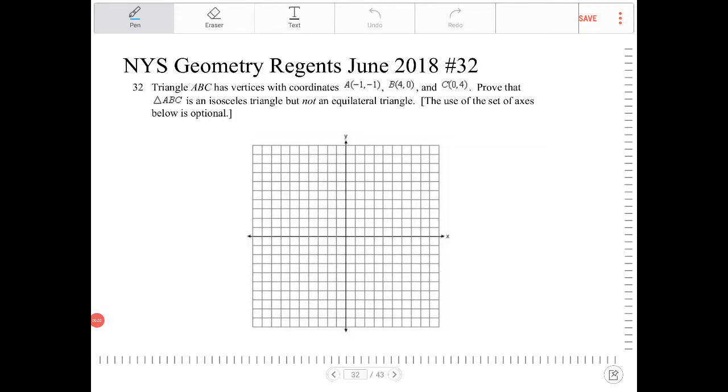Triangle ABC has vertices with coordinates A(-1,-1), B(4,0), and C(0,4). Prove that triangle ABC is an isosceles triangle but not an equilateral triangle.